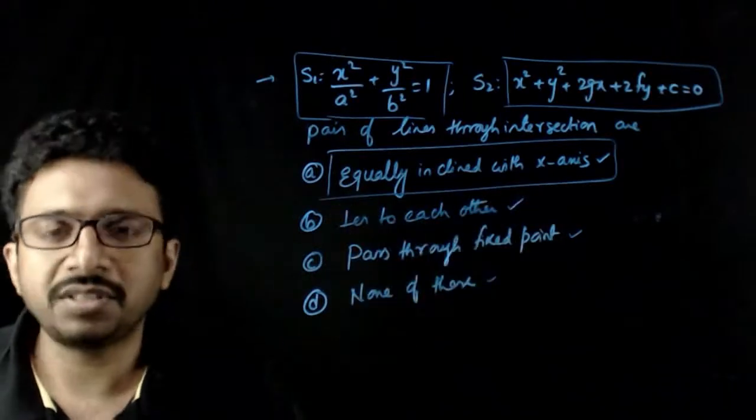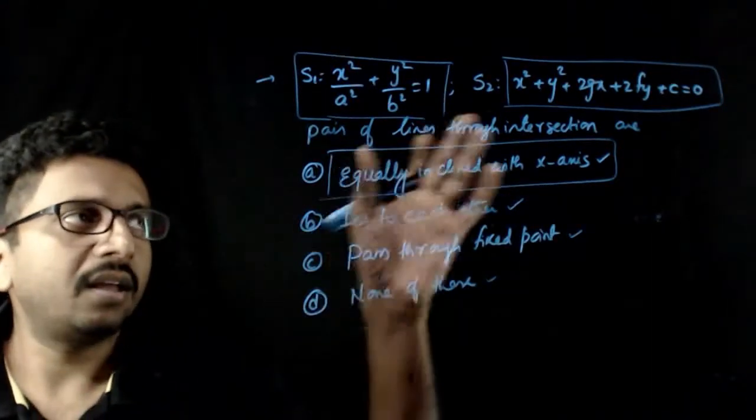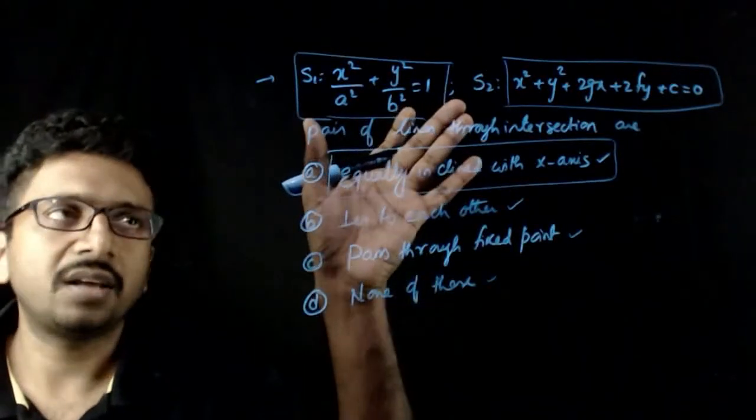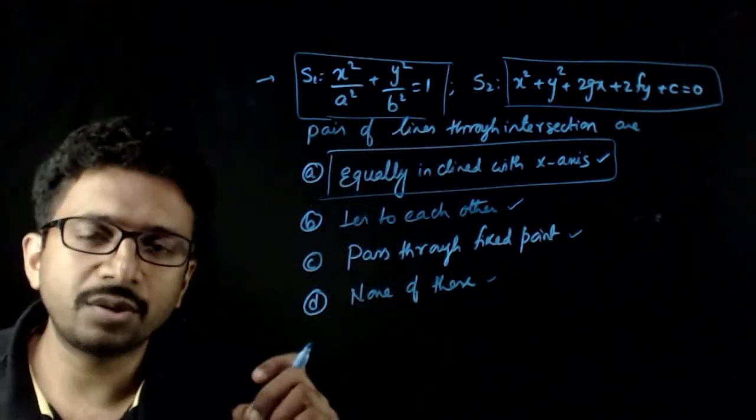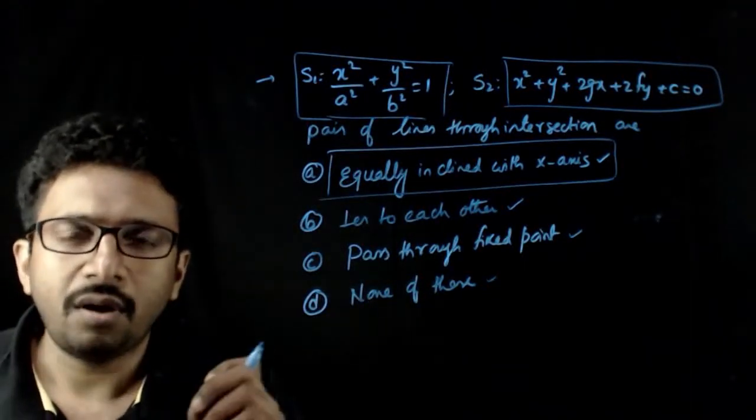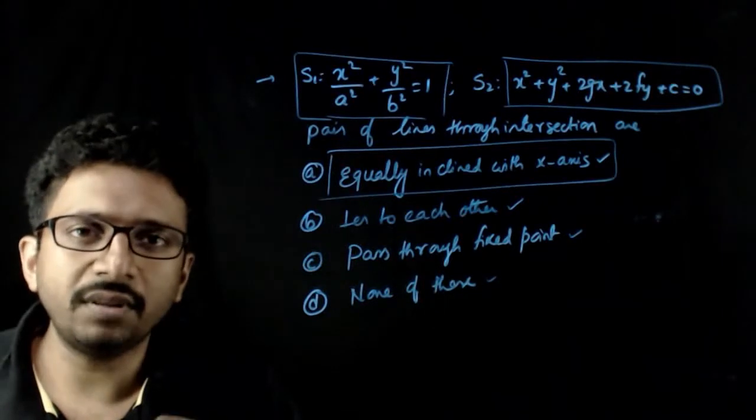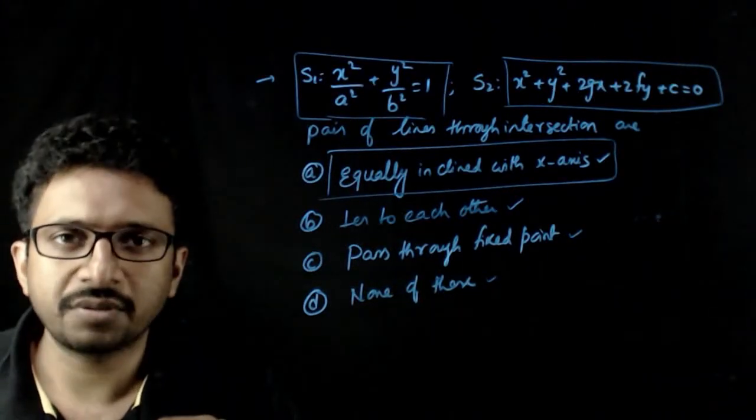You need to remember this statement that when a circle cuts an ellipse, the pair of lines through the points of intersection are always equally inclined with the axis of the ellipse. Thank you.